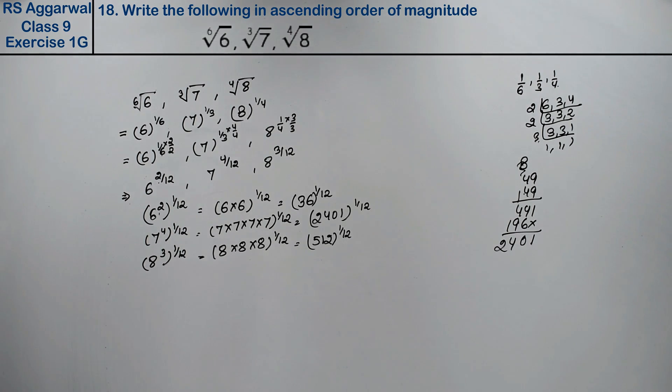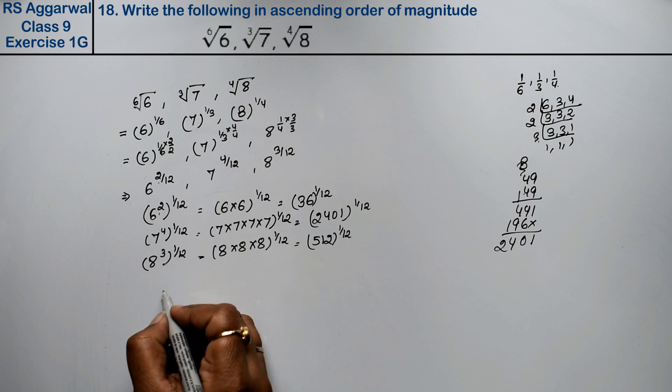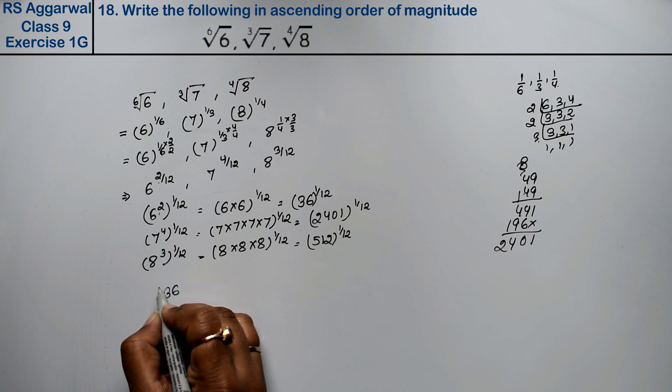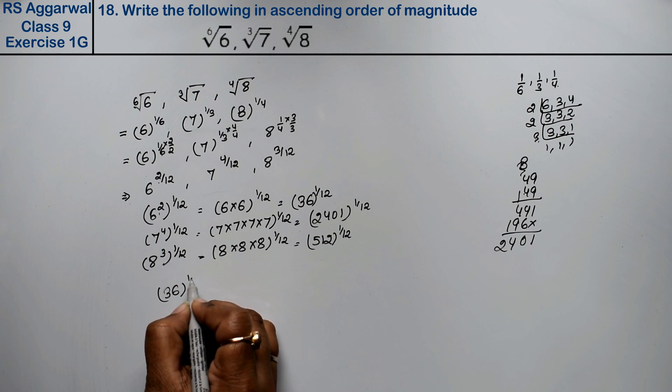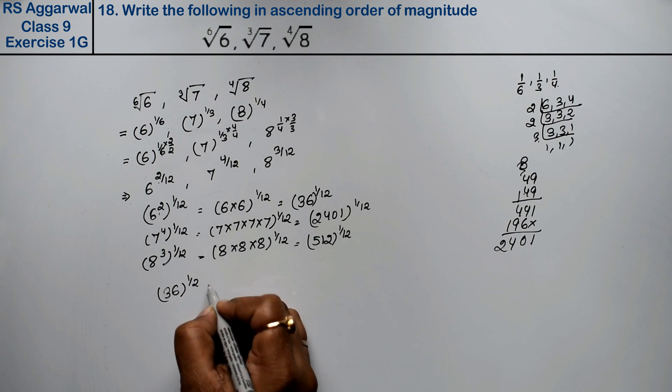Now, all three have the same power of 1/12. Now we need to write them in ascending order — ascending means from smallest to largest. The smallest base is 36, so 36^(1/12) is the smallest.